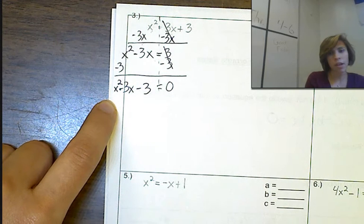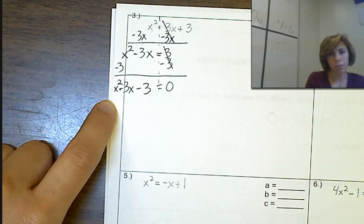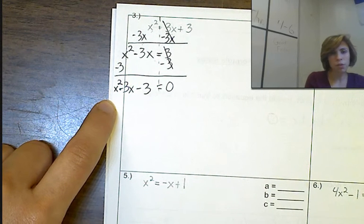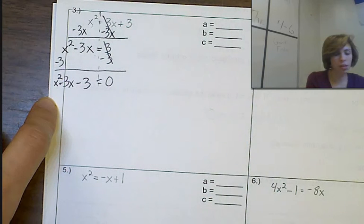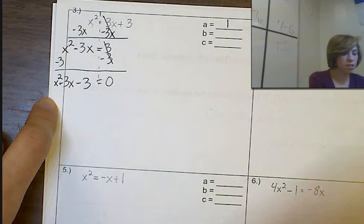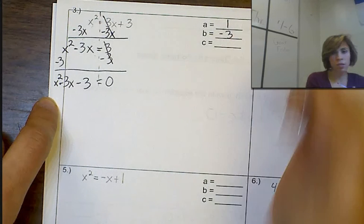So from here, we are going to label our a, our b, our c. Our a is 1, our b is negative 3, our c is negative 3.